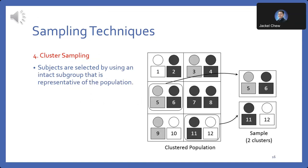Cluster sampling: in this method, intact subgroups or clusters are randomly selected and all members within the chosen clusters are included in the sample. This is particularly useful when it's impractical to sample individuals directly.